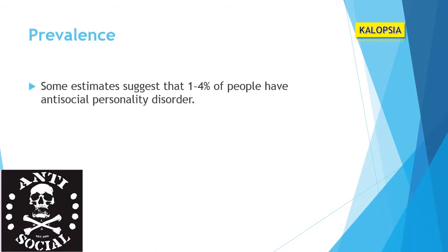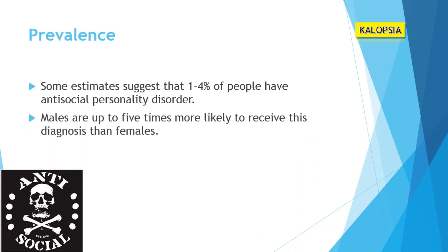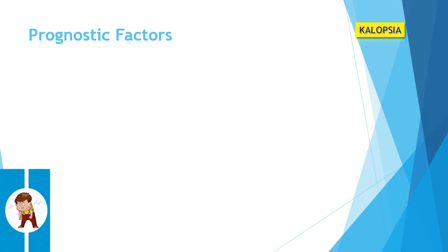Talking about the prevalence rate of antisocial personality disorder, some estimates suggest that one to four percent of people have antisocial personality disorder. It is also seen that males are up to five times more likely to receive this diagnosis than females.